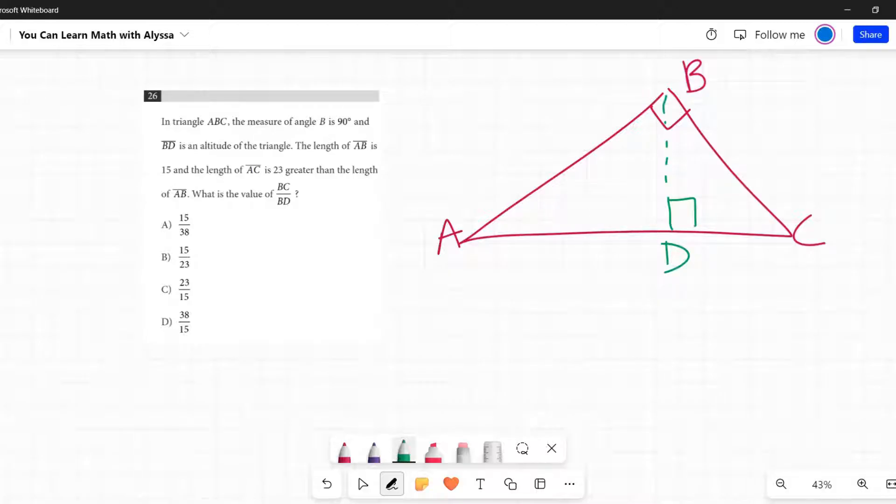The length of AB is 15 and the length of AC is 23 greater than the length of AB, which is a fancy way of saying 15 plus 23 or 38. That is, AC is 38. What is the value of BC divided by BD?